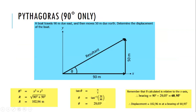We did one example: a boat travels 90 metres due east and 50 metres due north. We calculated the resultant force and the angle theta between the resultant and the x-axis, which gives us the direction. We then converted theta into a bearing — starting from north (positive y-axis) and moving clockwise. That bearing came out to 60.95 degrees, because 90 minus theta gives us that angle.